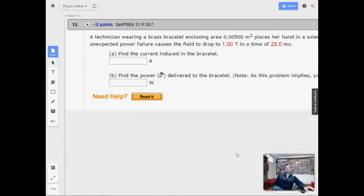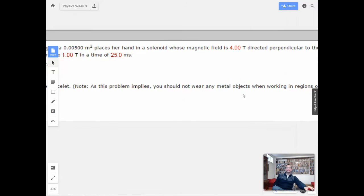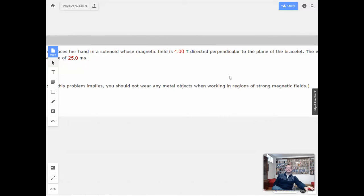Week 9, problem 12. A technician wearing a brass bracelet enclosing area of 0.005 square meters places her hand in a solenoid whose magnetic field is four Teslas. That's a lot of magnetic field. That is a lot of magnetic field. Maybe it's like an MRI or something?